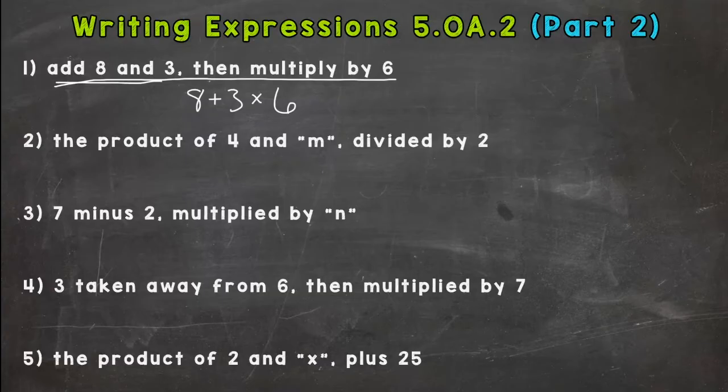But we don't want to multiply before we add. We want to add 8 and 3, then multiply by 6. So what we do is we put parentheses around what we do first. If you see parentheses in a math problem, that means you automatically have to do that first. So this says (8+3)×6. So we're good to go.